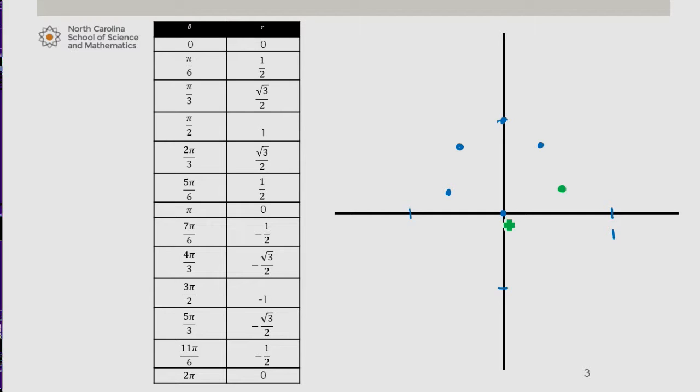4 pi over 3, so there's my angle, 4 pi over 3, negative root 3 over 2 is plotted here. 3 pi over 2 as an angle measure, negative 1 for my r value is plotted up here.